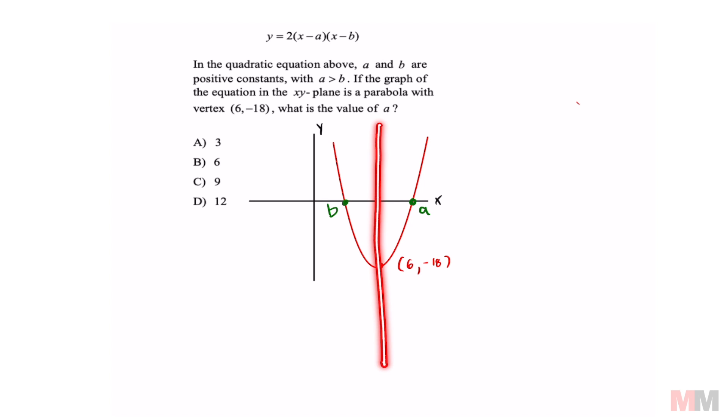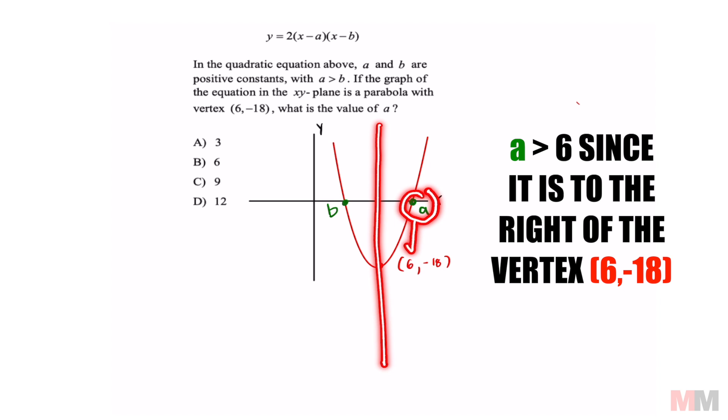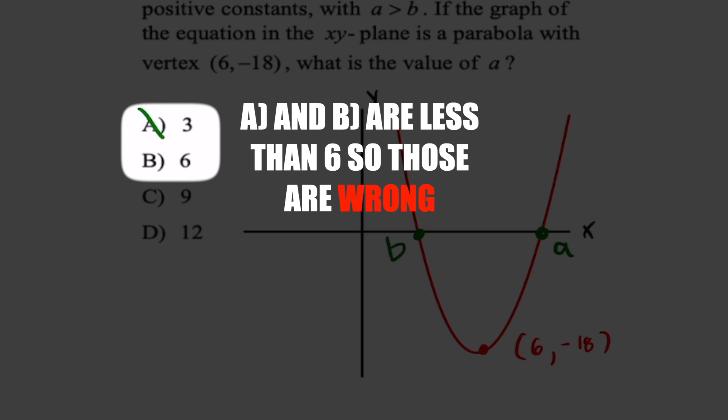So if this is your vertex and a is to the right of it, that means that a has to be greater than 6, meaning that a and b are wrong. So all we got to do is test out 9 or 12.